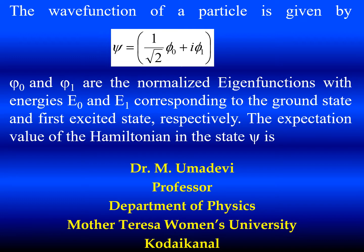Phi naught and phi 1 are the normalized eigenfunctions with energies E naught and E1 corresponding to the ground state and first excited state respectively.